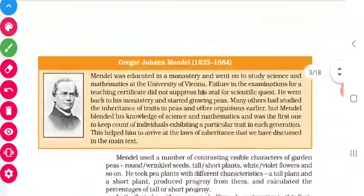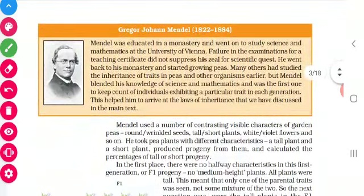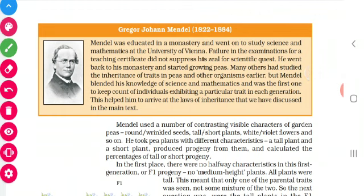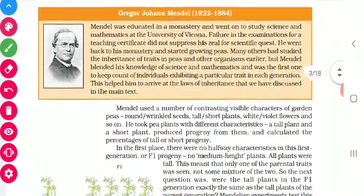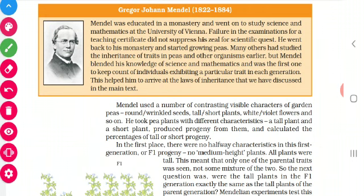Who is Mendel? He is a great scientist. Gregor Johann Mendel, 1822-1884. He was a scientist as well as a mathematician. He had failed in his examination, and after failing he went to grow peas - peas, you know, what we call 'Patani'. Using his scientific and mathematical knowledge, he observed how the characteristics are inherited in peas, and from that he derived many laws of inheritance.